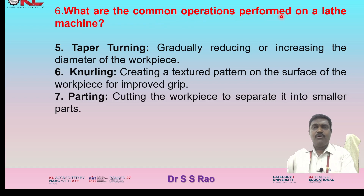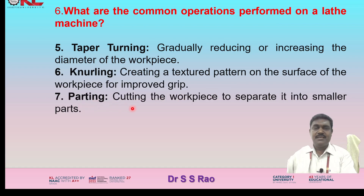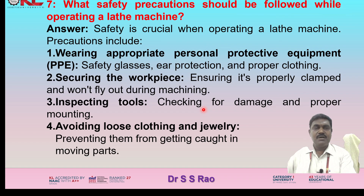Additional operations include: taper turning — gradually reducing or increasing the diameter of the workpiece; knurling — creating a textured pattern on the surface of the workpiece for improved gripping; and parting — cutting the workpiece to separate it into smaller parts.